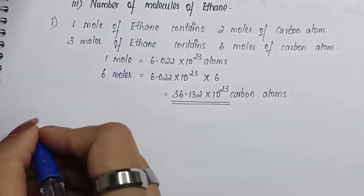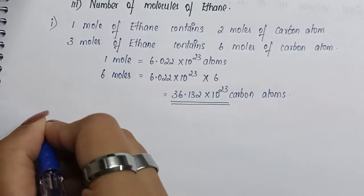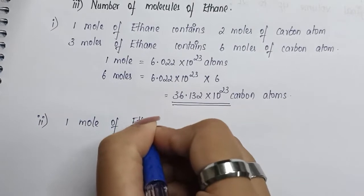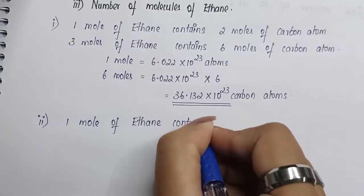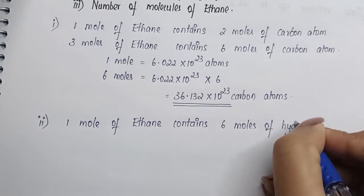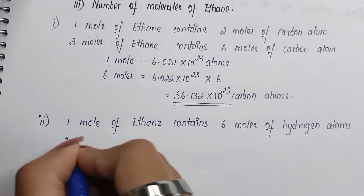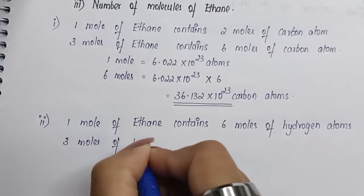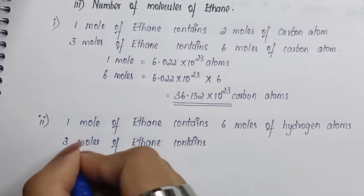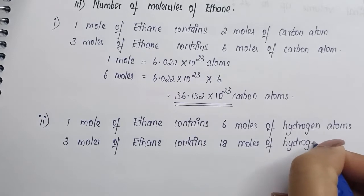For the second question, the number of moles of hydrogen atom, we solve the same way as for carbon. As per the formula, one mole of ethane contains six moles of hydrogen atom, because ethane has six hydrogen atoms. Therefore, three moles of ethane contains six into three, which gives 18 moles of hydrogen atom.